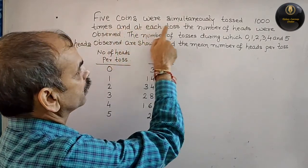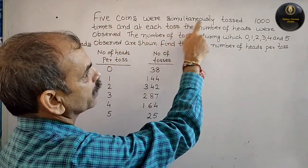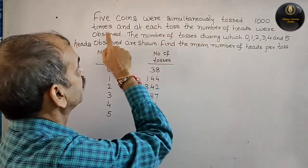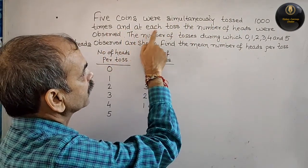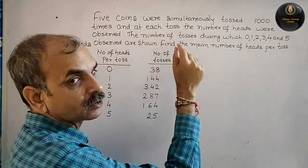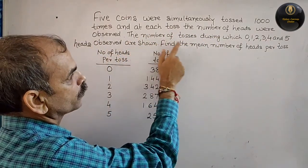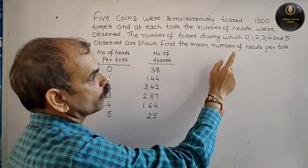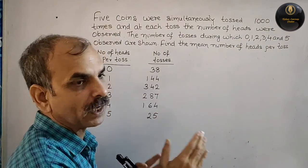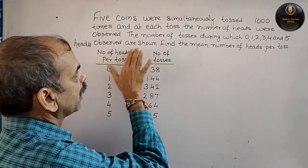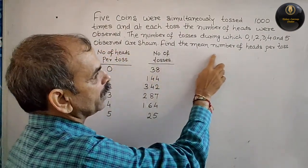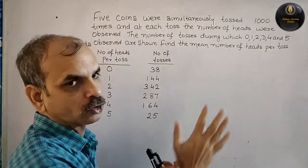Five coins were simultaneously tossed 1000 times and at each toss the number of heads were observed. The number of tosses during which 0, 1, 2, 3, 4 and 5 heads were observed are shown. Find the mean number of heads per toss.